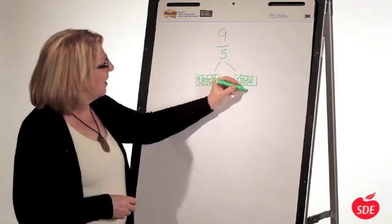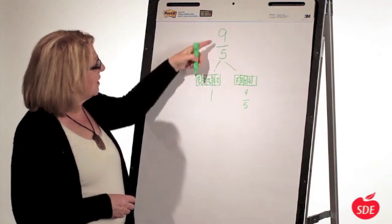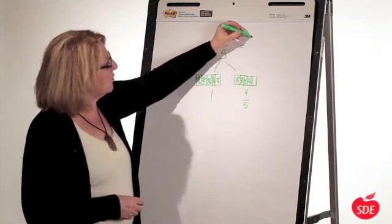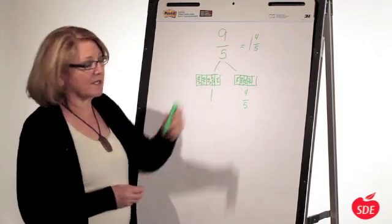There's 1 whole and 4 fifths. So 9 fifths equals 1 and 4 fifths.